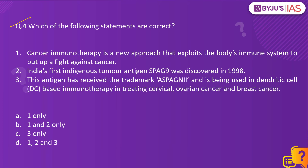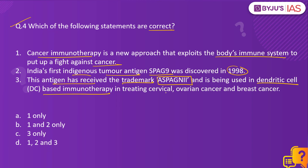Let's move on to the fourth question. Which of the following statements are correct? Cancer immunotherapy is a new approach that exploits the body's immune system to fight against cancer. India's first indigenous tumor antigen, SPAG9, was discovered in 1998. This antigen has received the trademark ASPAGNII and is being used in dendritic cell-based immunotherapy in treating various forms of cancer including cervical cancer, ovarian cancer, and breast cancer. All three statements are correct — option D is the right answer.